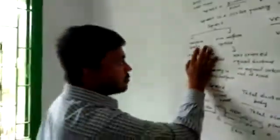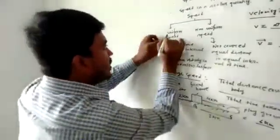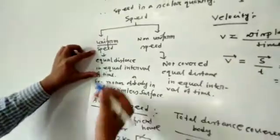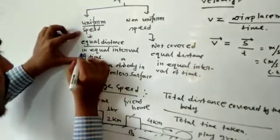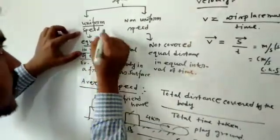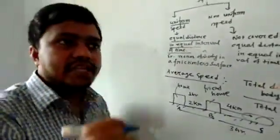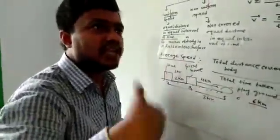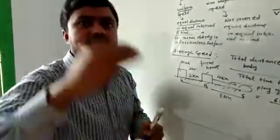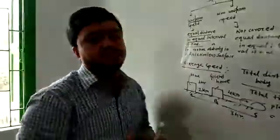Now, dear students, speed is mainly of two types: one is uniform speed and the second is non-uniform speed. Uniform speed means equal distance is covered in equal intervals of time. In uniform speed, two parameters should be the same. For example, in the first 10 seconds the particle covers 10 meters, in the next 10 seconds also 10 meters, and the next 10 seconds also 10 meters — that means equal distance in equal intervals of time.